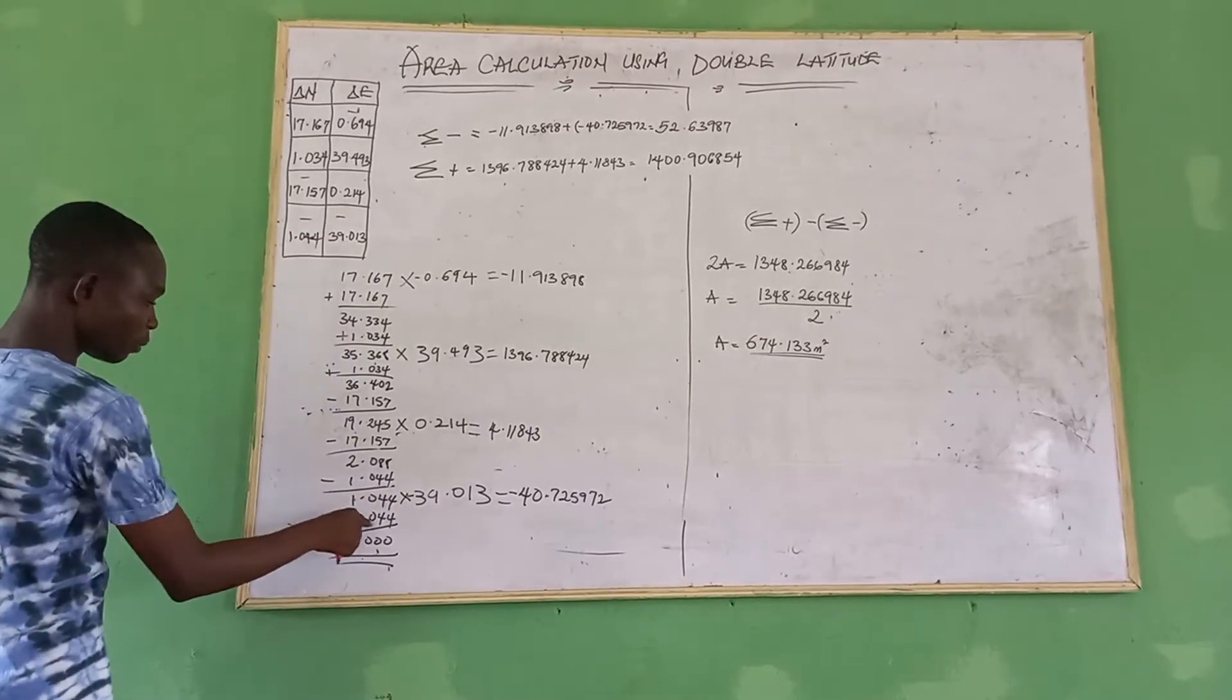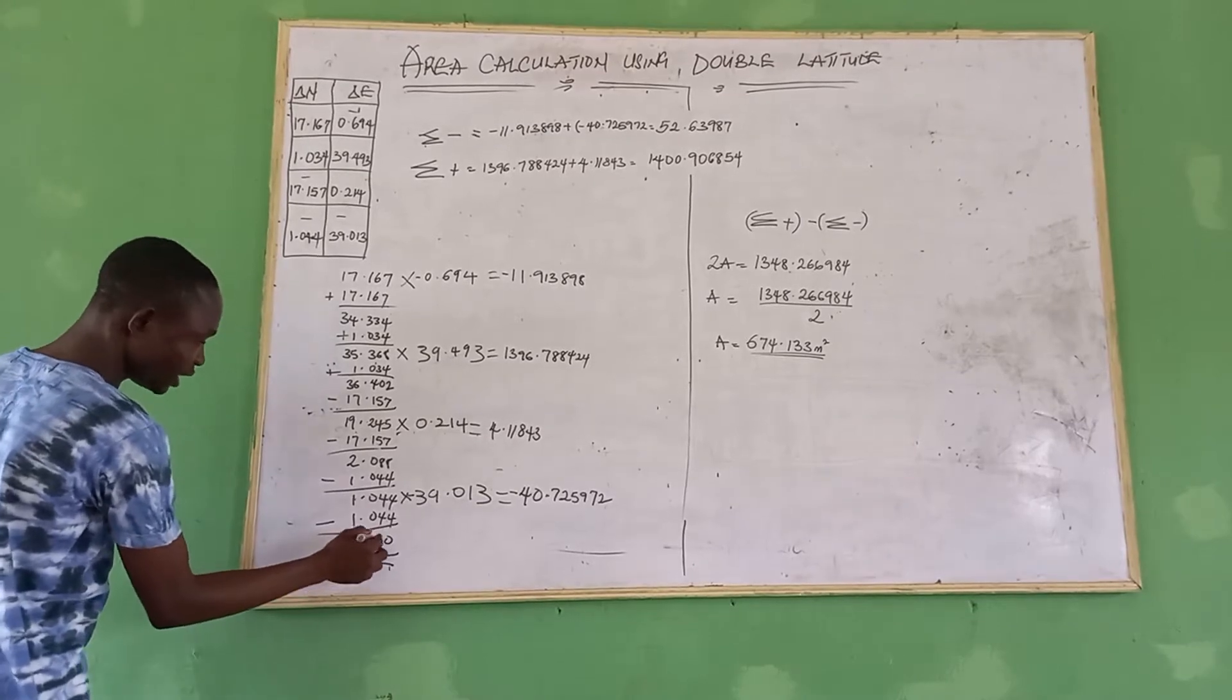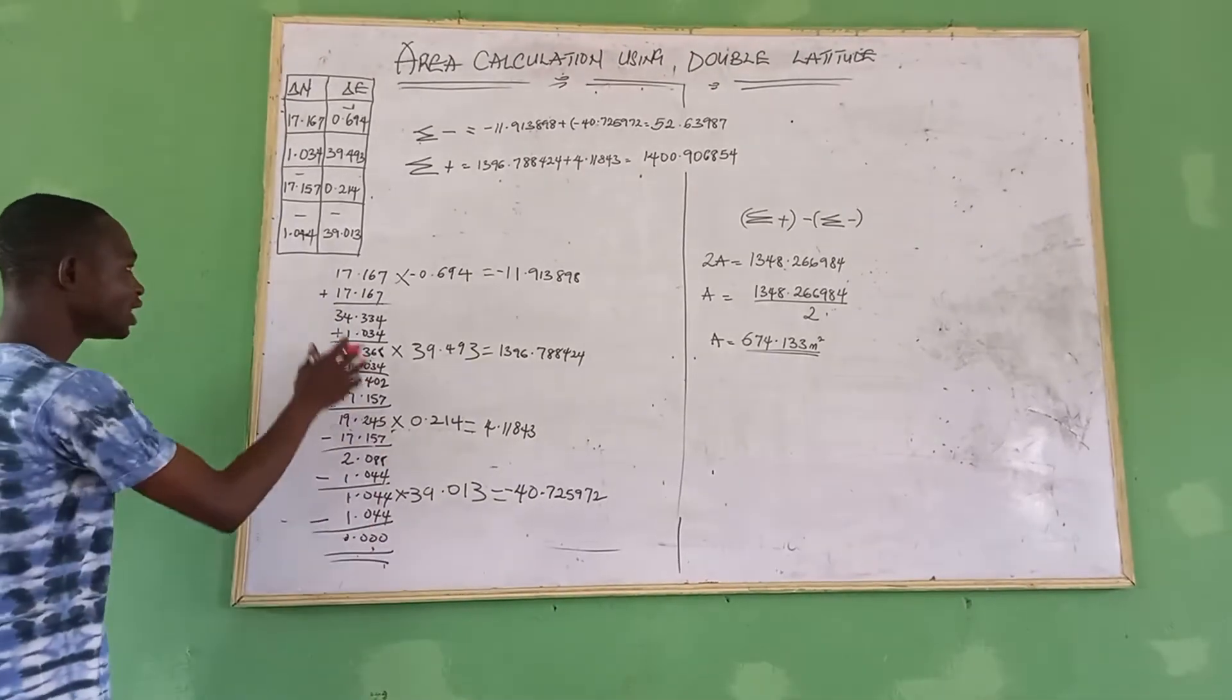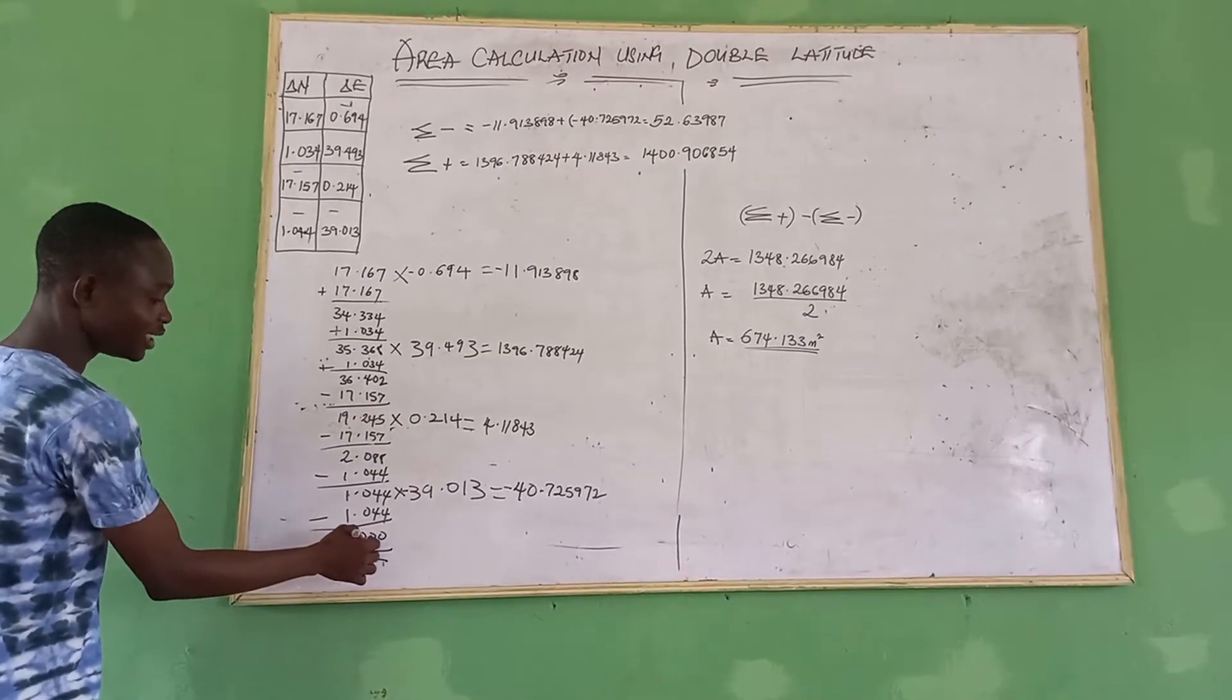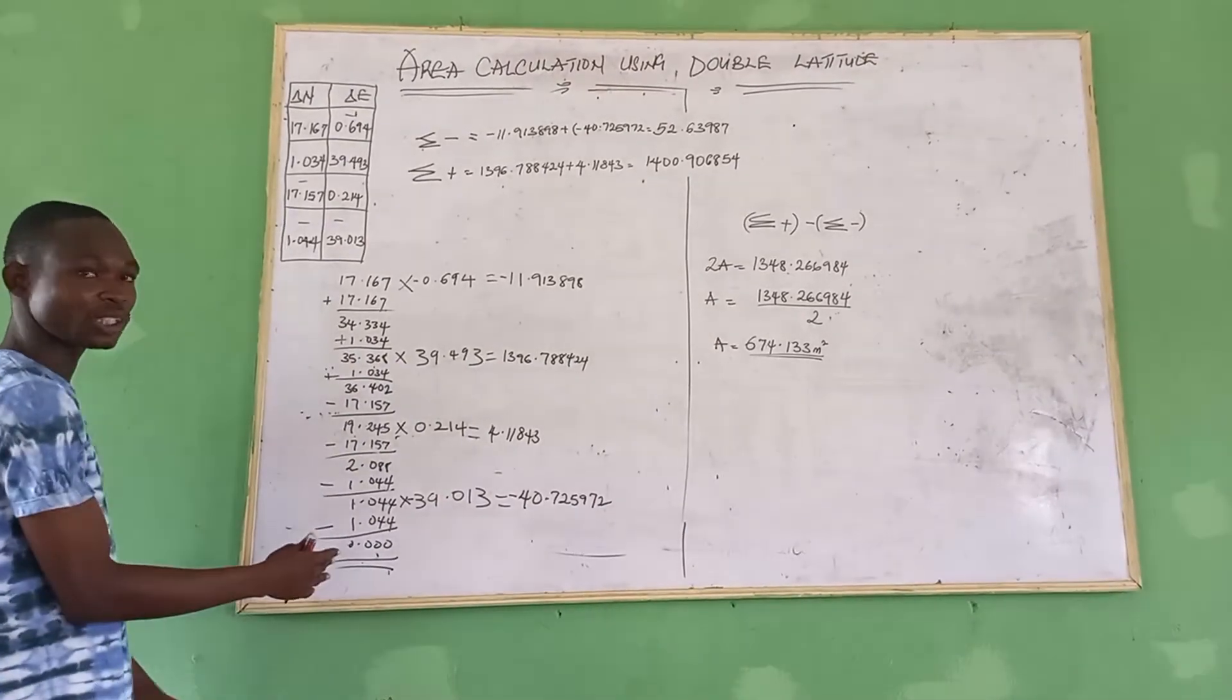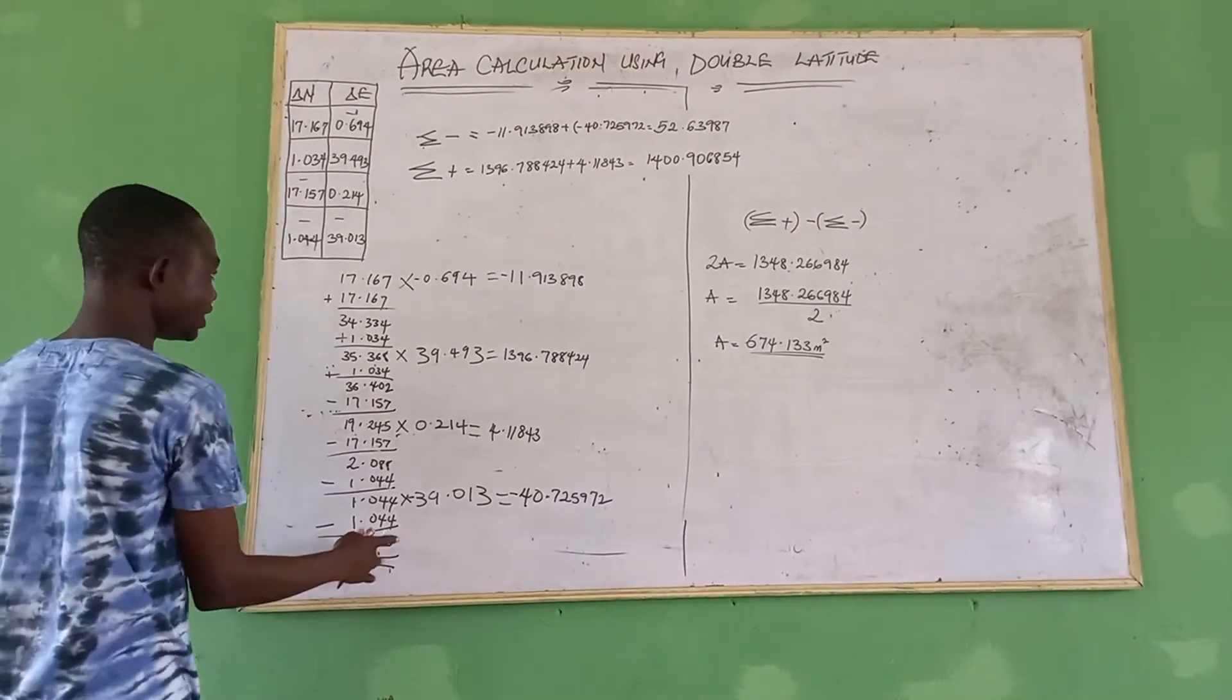We bring it up again, minus 1.044, which gives us 0.000. The principle behind this thing is, at the end of the day after you calculate everything, it must give you a value of 0.000, which means that everything is now calculated. So after you have done with your data notice value, which is this.